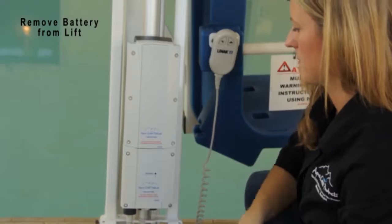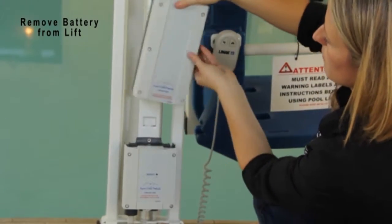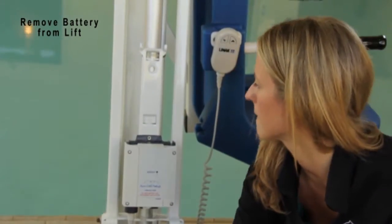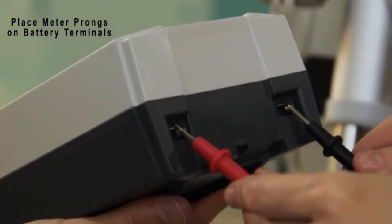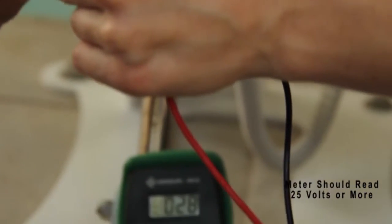Remove the battery from your lift. Using a voltmeter, place the prongs on the two terminal tabs. A fully charged battery should read 25 volts or higher.